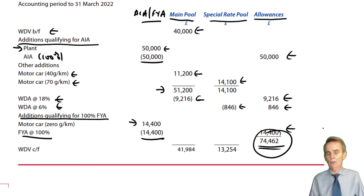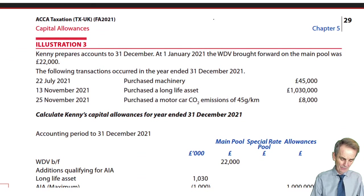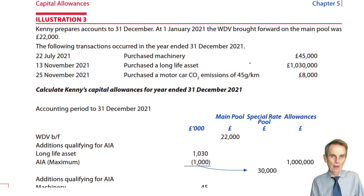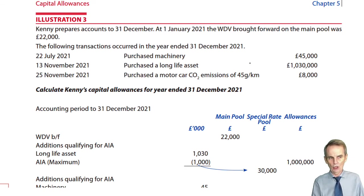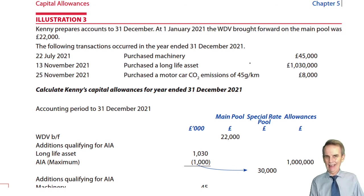If needs be, pause here to go back through that and make sure you're happy. Otherwise, we progress to Illustration 3. What we've done this time is to bring in a whole lot of expenditure eligible for AIA — a mix of both main pool and special rate pool expenditure. That means if we exceed the AIA limit, you have to decide which expense item — main pool or special rate pool — gets first crack at any available AIA.